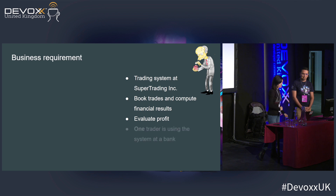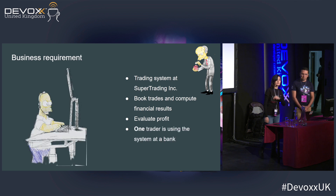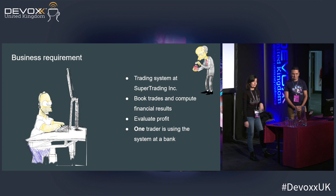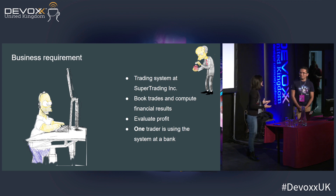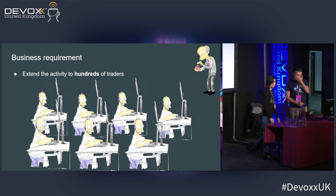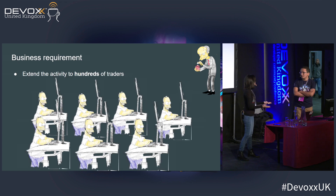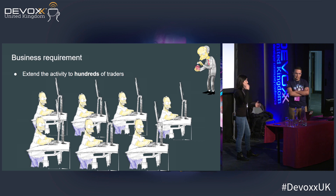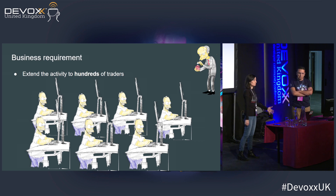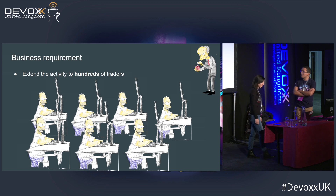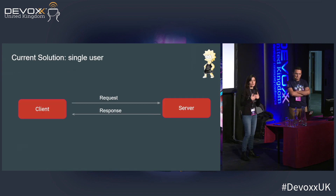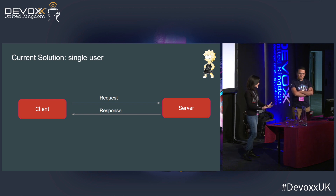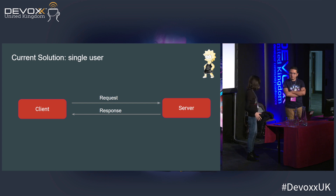Our system is currently being used by one trader at a bank, and they are extremely happy with it. The bank has decided to extend the activity to the entire trading floor — meaning hundreds of traders. We are extremely excited about this great business opportunity and eager to get it into production. I am also a junior developer, so I'll be explaining the architecture and the code we have today.